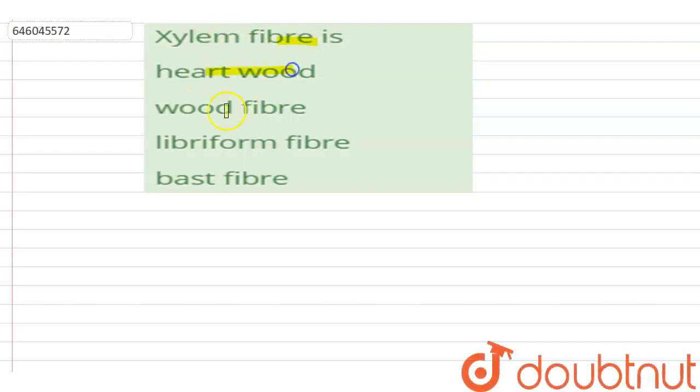And options are heartwood, wood fiber, libriform fiber, and bast fiber. So the correct option is wood fiber.